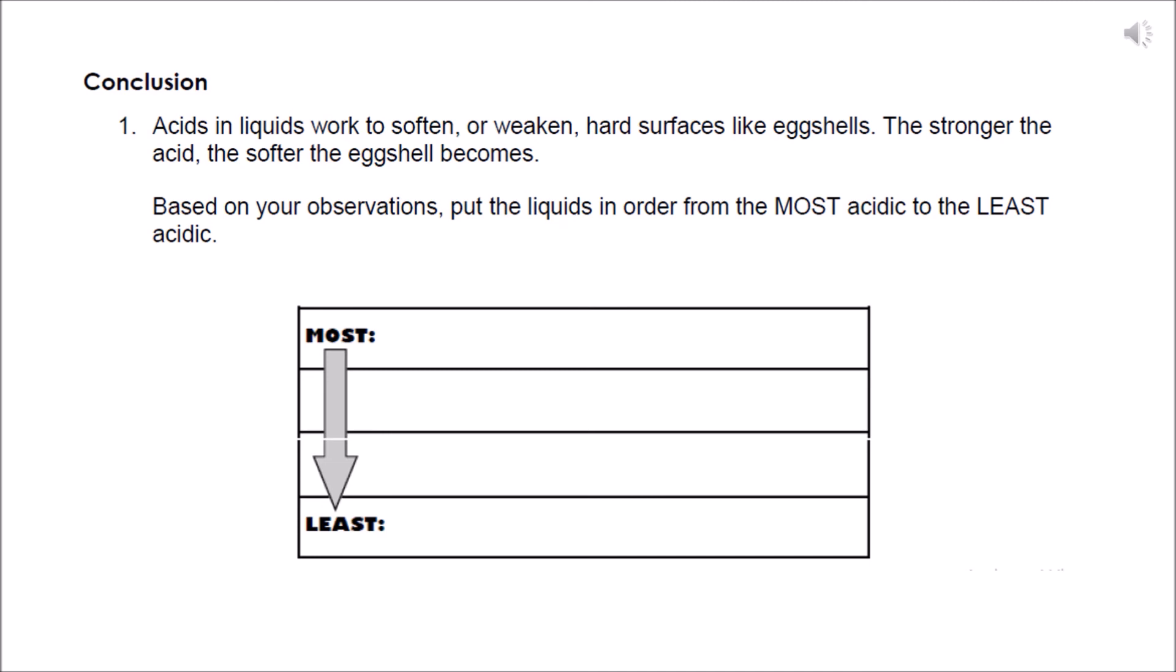We have the coffee, we have Pepsi, water, and juice. Which one do you think is the most acidic? Because it has the most degeneration of the eggshell. And which one do you think is the least acidic? The least would be the egg that is closest to the original form.